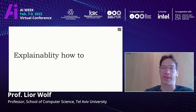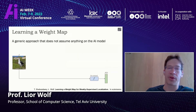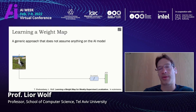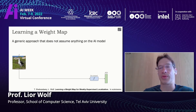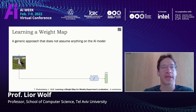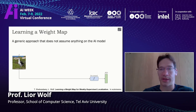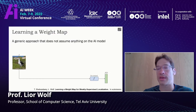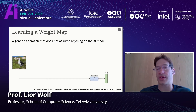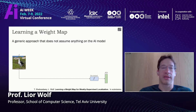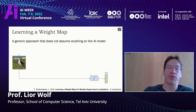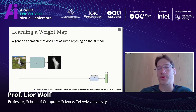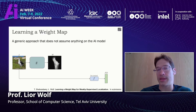I'm going to describe how we achieve explainability and how we can use it to trust AI machines. I'll start with a very simple, generic method that you can apply to any classifier without going into the black box. We start with an image I and a pre-trained classifier F that tells us whether something is a dog, cat, or bird. We train a second network G that gets an image as input and outputs a weight map.